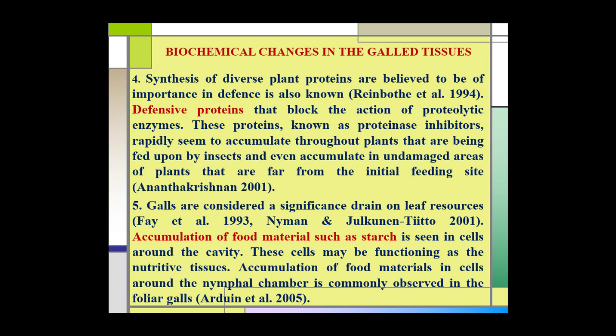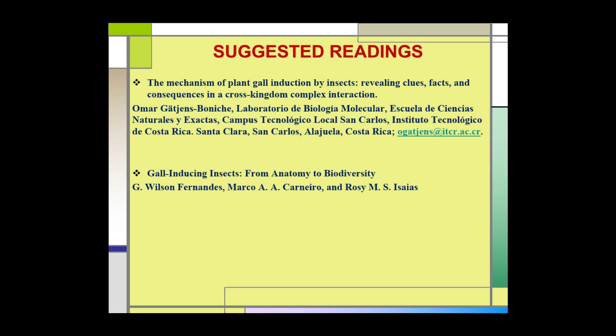Another biochemical change is the synthesis of diverse plant proteins, which is believed to occur and may be important in defense. Defensive proteins block the action of proteolytic enzymes; these proteins are known as proteinase inhibitors and rapidly accumulate throughout the plant being fed upon by insects, even in undamaged areas far from the initial feeding site. The galls are considered a significant drain on leaf resources. Accumulation of food materials such as starch is seen in cells around the activity, and these cells may be functioning as nutritive tissue. Accumulation of food materials in cells around the nymphal chamber is commonly observed in foliar galls.